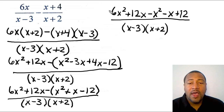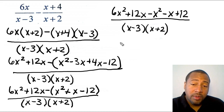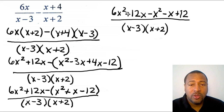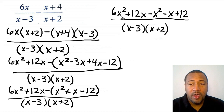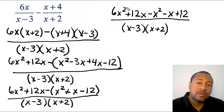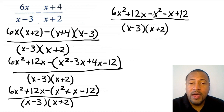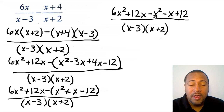Now all I have to do is combine all like terms in the numerator. I look for terms with x²: I have 6x² and negative x², and since there's an imaginary coefficient of 1 on the second term, 6 minus 1 gives me positive 5. So I get 5x².